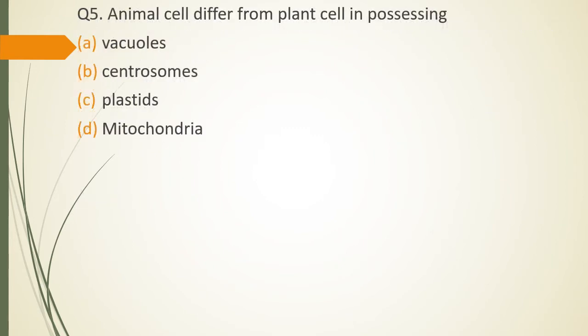Question No. 5: Animal cells differ from plant cell in possessing Vacuoles, Centrosomes, Plastids, Mitochondria. Which of the following organism is present in animal cell and not found in plant cell? The correct answer is option B Centrosomes.